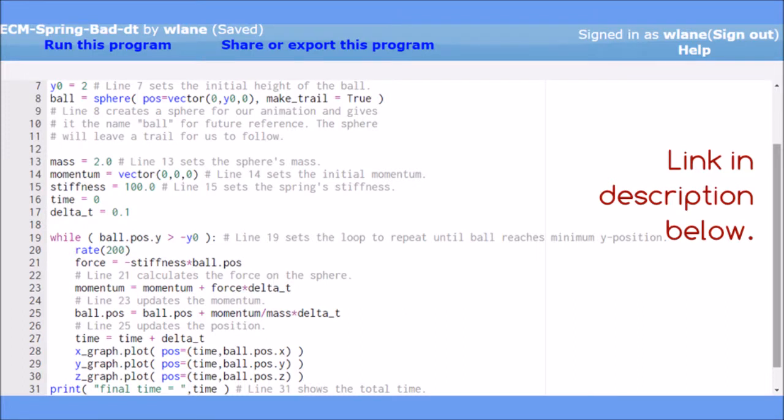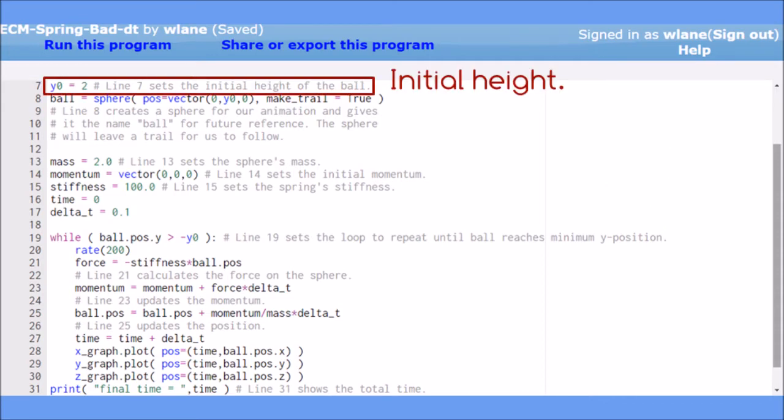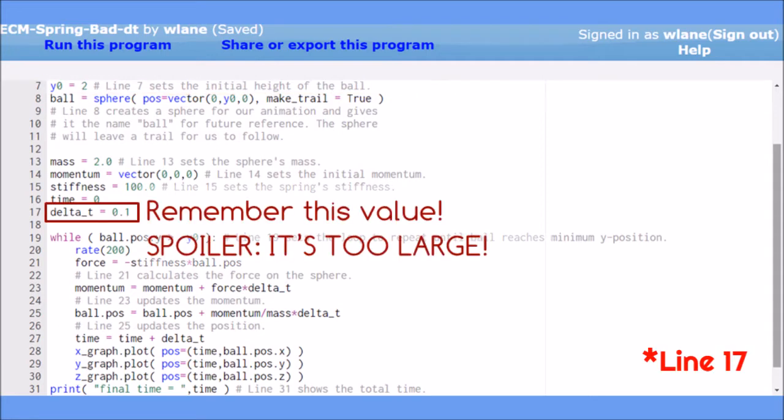This code is a modified version of our spring force code. In line 7, we're using a variable to specify the ball's initial height because we want to refer to this value later. In line 16, we've set the step size to be 0.1. Keep this value in mind while we run the simulation.